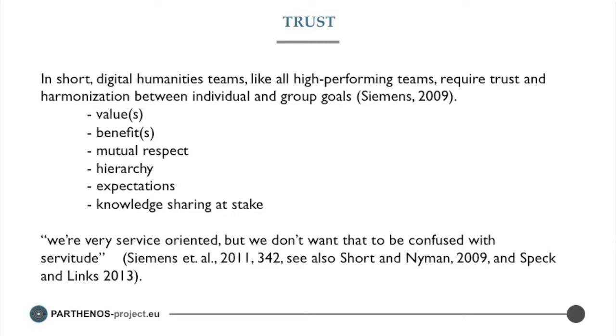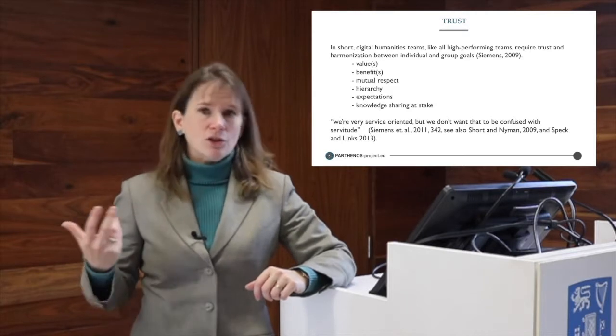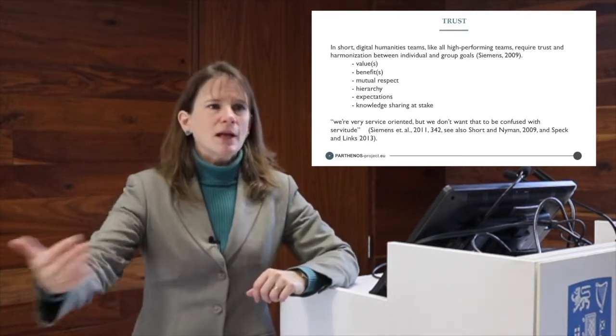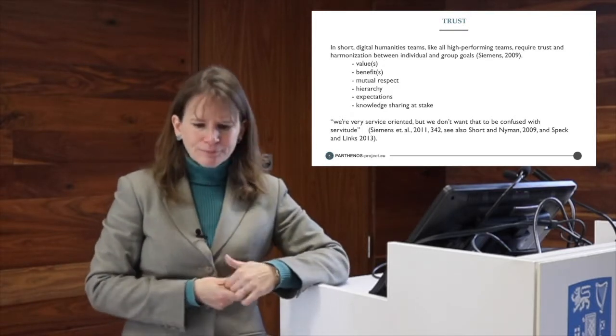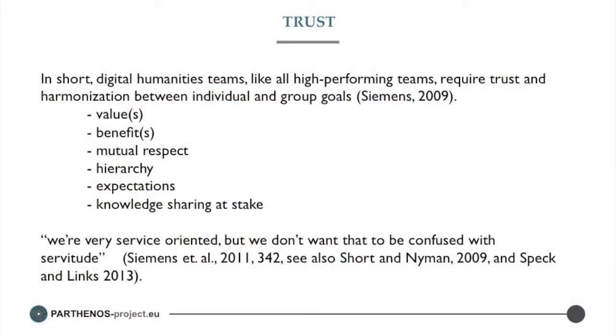Trust has to do with the alignment of deep-set attitudes, values, benefits, mutual respects, hierarchies, and expectations. When you look at that diversity — the concerns, experiences, and cultures, not just in terms of national cultures but in terms of a library science or information science culture, a computer science culture, a humanities discipline culture — when these cultures come together it can be challenging. I really love this quote by Lynn Siemens: 'We're very service-oriented, but we don't want that to be confused with servitude.' There is this tension: when different cultures and different levels of knowledge and experience come together, how do you create a parity of esteem and a basis of trust that allows a project or infrastructure to develop and flourish?